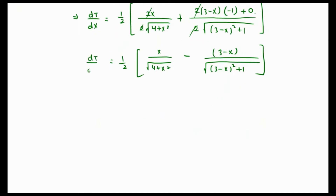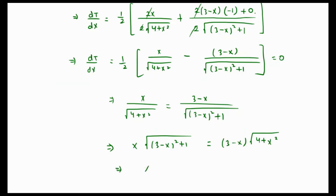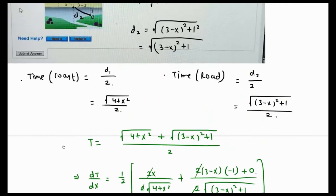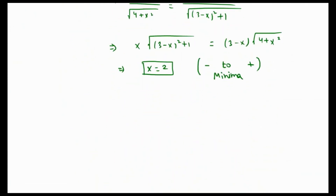To find the minimum, we equate dT/dx to zero: x over the square root of (4 + x²) equals (3 − x) over the square root of (3 − x)² + 1. Cross-multiplying gives x times the square root of (3 − x)² + 1 equals (3 − x) times the square root of (4 + x²). Using a graphical calculator, the value of x is 2. The derivative changes from negative to positive at this point, confirming a minimum. Therefore, he should row to a point 2 miles along the coast.